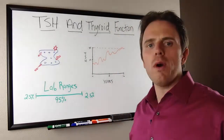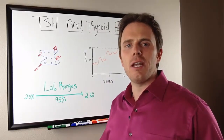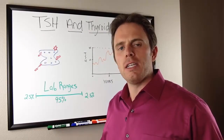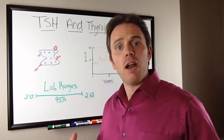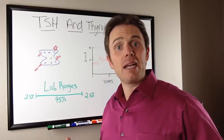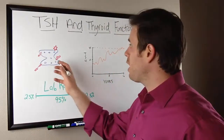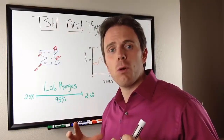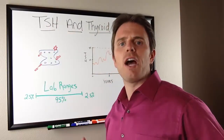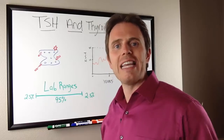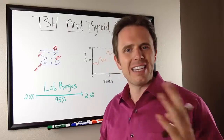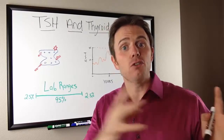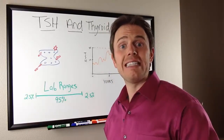So let's recap. What is TSH? TSH is a pituitary, or brain, hormone. TSH screams down to the thyroid gland to make some thyroid hormone. The thyroid pops out some T4, which is inactivated thyroid hormone, and there's a cascade of T4 — which is inactive — getting converted to active T3.